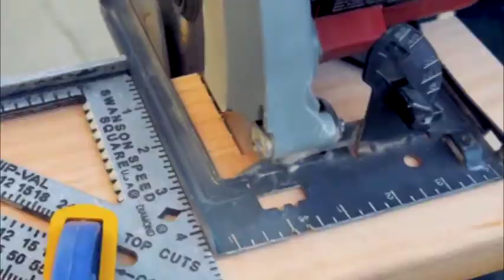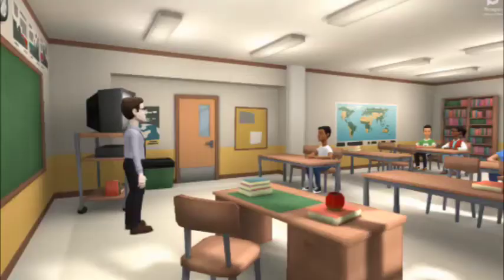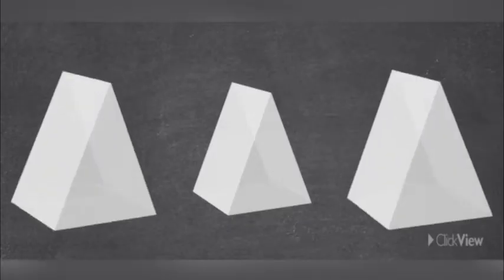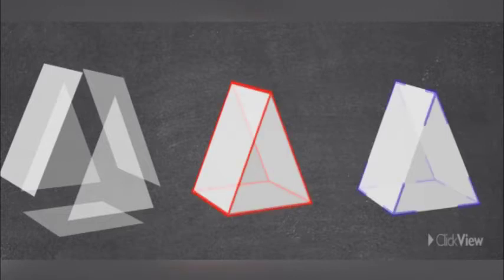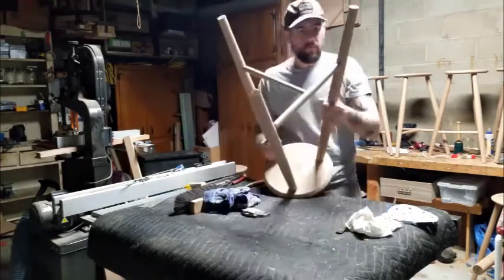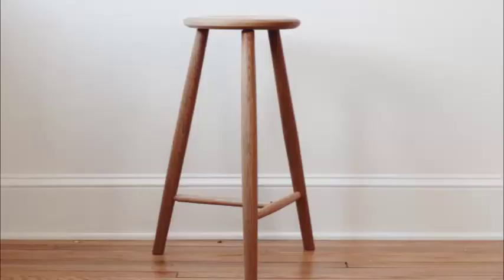A saw blade cuts in a straight line because it represents two intersecting planes — the saw and the piece of wood. Another property of planes is that three non-collinear points lie in the same plane. For example, a triangle has three vertices, so it will lie on a flat surface. Three-legged stools will never wobble because the three ends of the legs lie on the same plane regardless of their length.